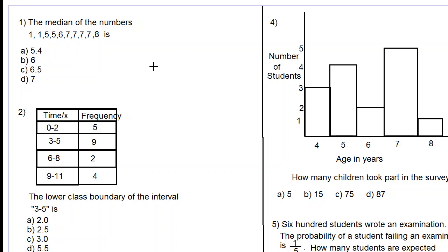Good day everyone, let's look at these statistics and probability questions. The median of the numbers 1, 1, 5, 5, 6, 7, 7, 7, 7, 8. As we can see, the numbers are in ascending order from the smallest to the largest. When you see the word median, think middle - the middle number.